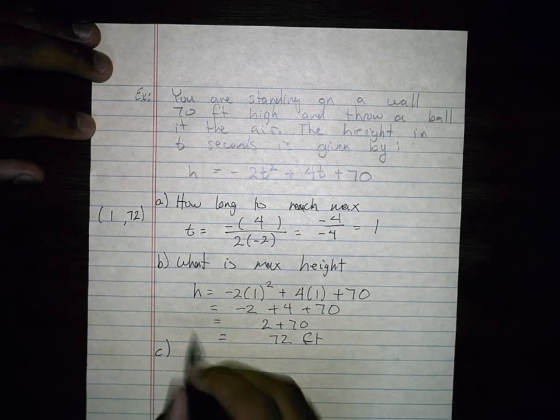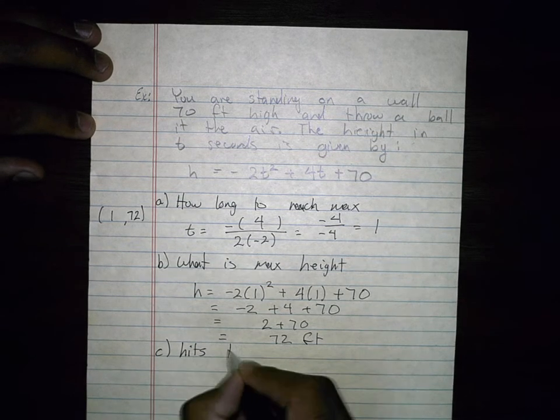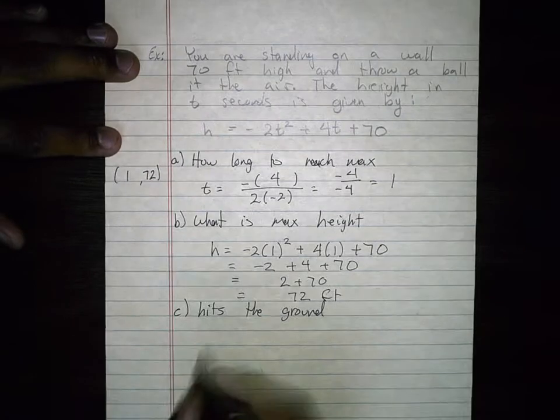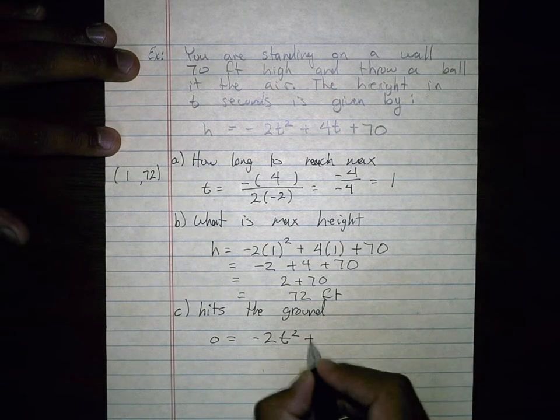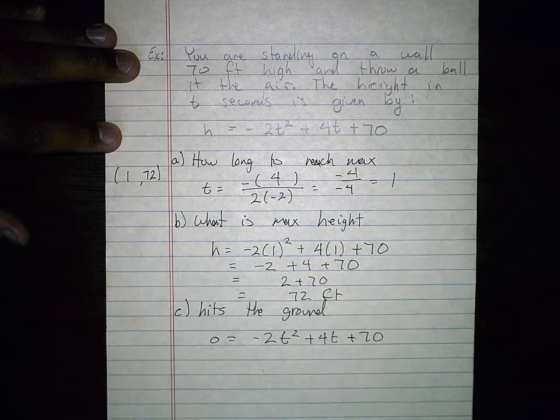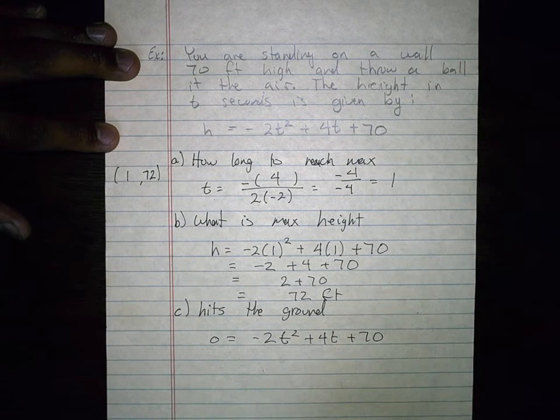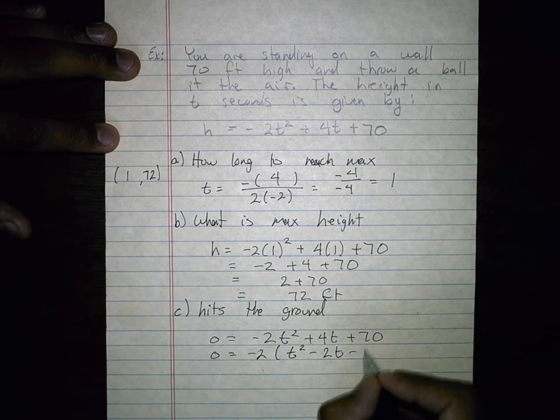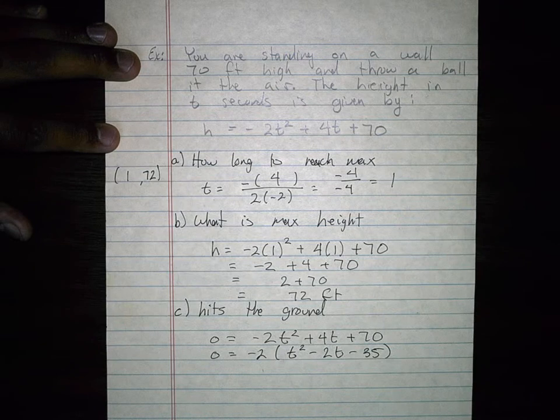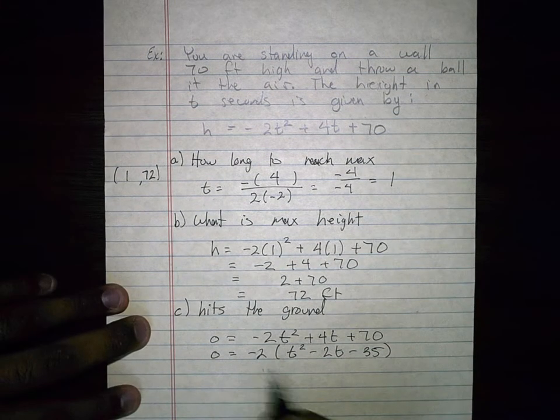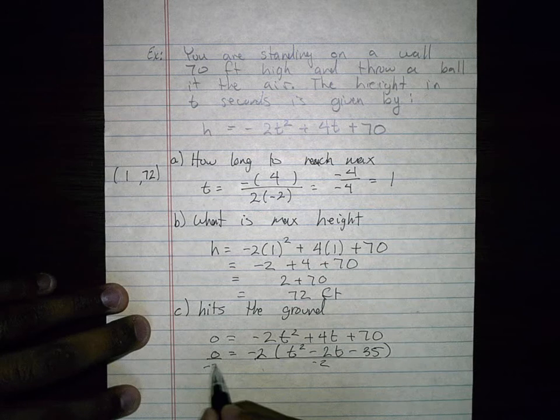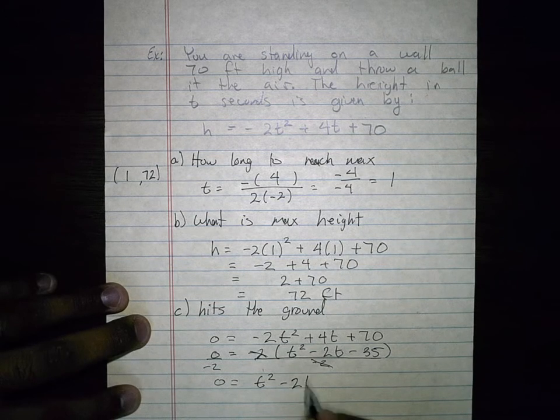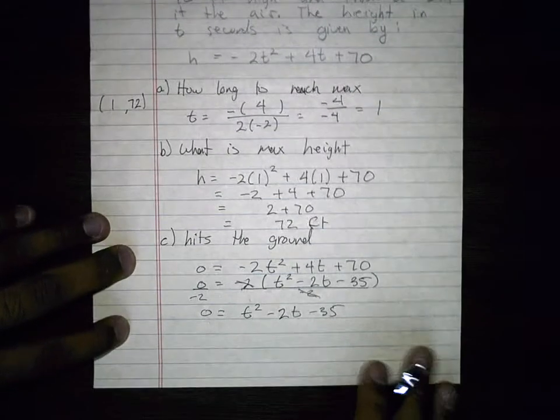So now let's go ahead and find out when it hits the ground. So when does it hit the ground? That's when h is 0, so I got to find the x-intercepts. So now I can factor. So I'm going to say 0 equals negative 2 times t squared minus 2t minus 35. And what I want to do is I don't even need that 2 in there. So what I could actually do is just divide everything by negative 2. And I get 0 equals t squared minus 2t minus 35.